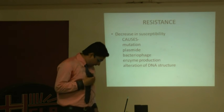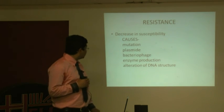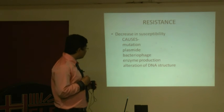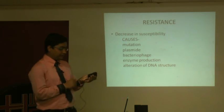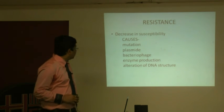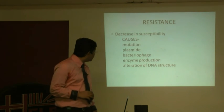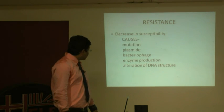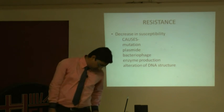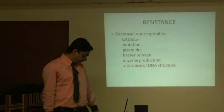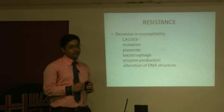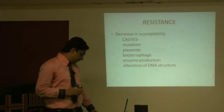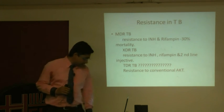Another mechanism of resistance is enzyme production. The main cause of resistance to ampicillin- or amoxicillin-type drugs is the production of enzymes such as penicillinase, which destroys the drug. Additionally, bacteria can develop resistance by altering their DNA structure or altering the target site where the drug acts, so the drug can no longer effectively bind or affect the bacterium.